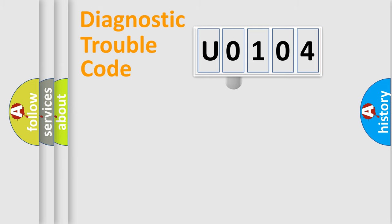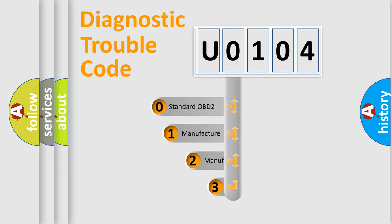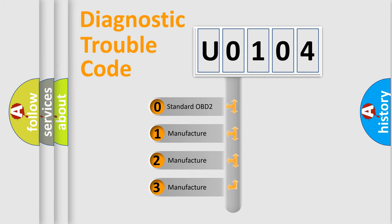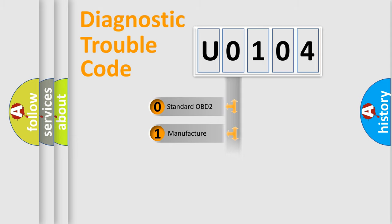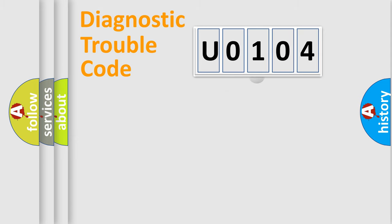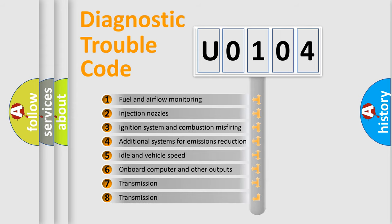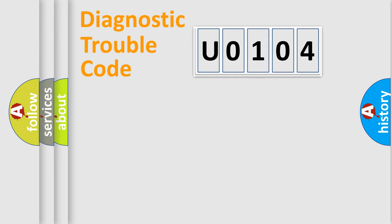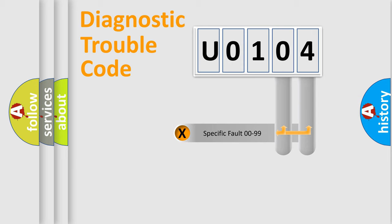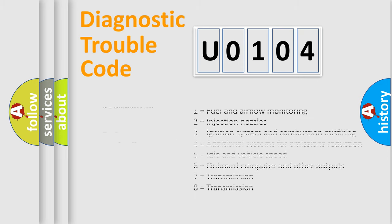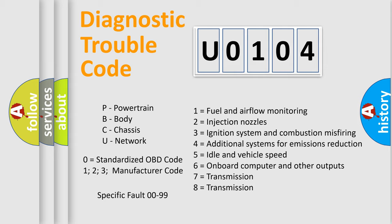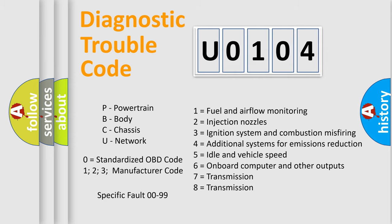This distribution is defined in the first character of the code. If the second character is expressed as zero, it is a standardized error. In the case of numbers 1, 2, or 3, it is a more manufacturer-specific expression of a car-specific error. The third character specifies a subset of errors, and this distribution is valid only for the standardized DTC code. Only the last two characters define the specific fault of the group. Note that such a division is valid only if the second character code is expressed by the number zero.